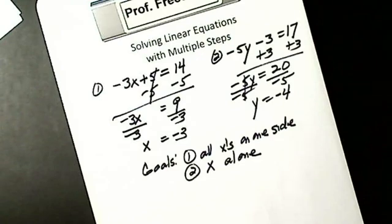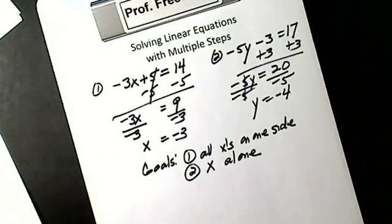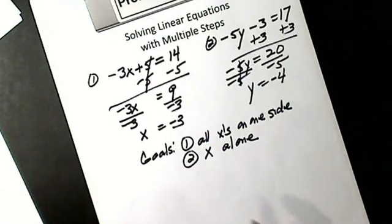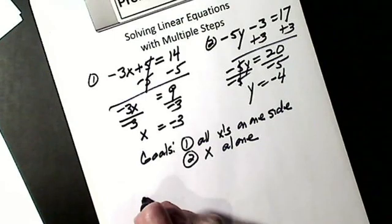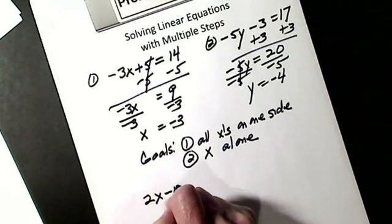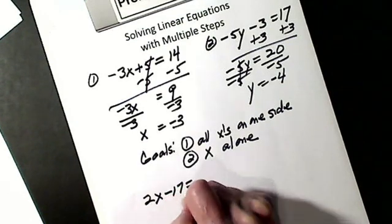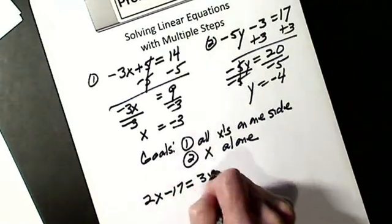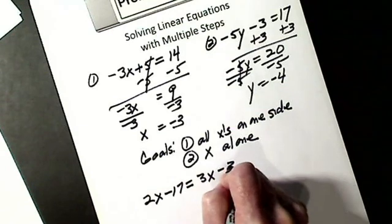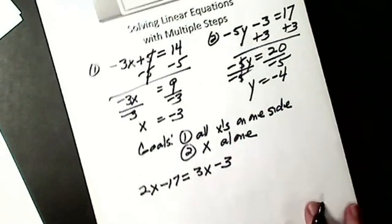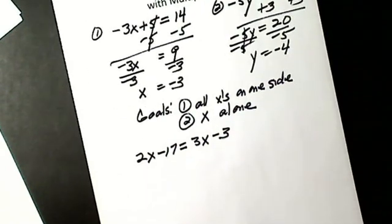Let's say I have one with an X on both sides. Let's say I have 2X minus 17 equals 3X minus 3.